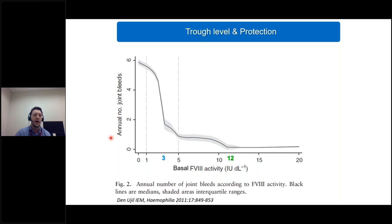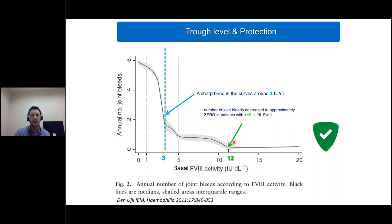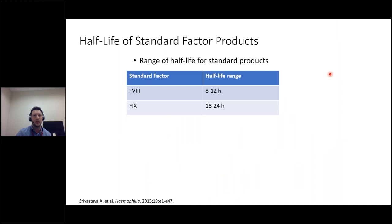In this graph, you see how the number of joint bleeds correlates to the baseline factor VIII activity. This is a paper published in 2011. We have a dramatic reduction of the number of joint bleeds when the baseline factor VIII activity, the trough level, is above one percent. And in particular, when it's above three percent, with nearly zero joint bleeds when it's above 12 percent.